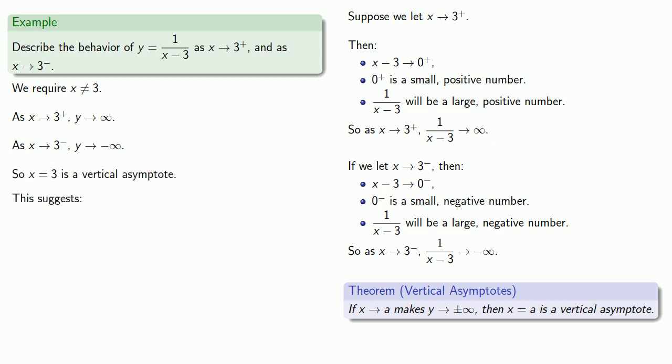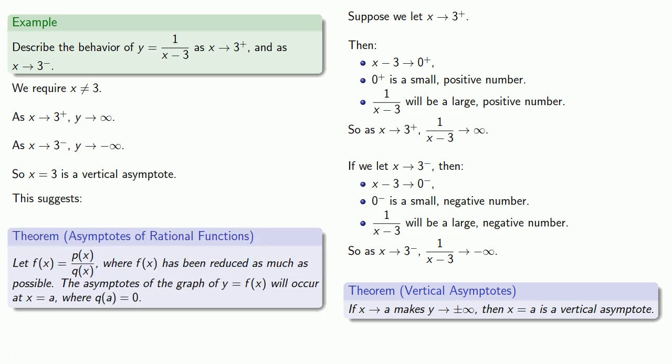This suggests the following idea: suppose we have a rational function where we've reduced it as much as possible. The vertical asymptotes of the graph of y equals f of x will occur at x equals a, where q of a is equal to 0. In other words, they're going to occur at places that make the rational function undefined.